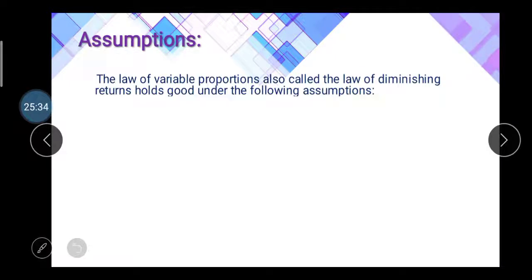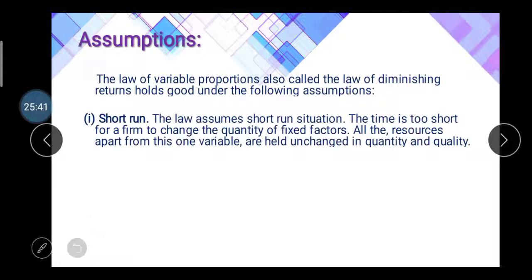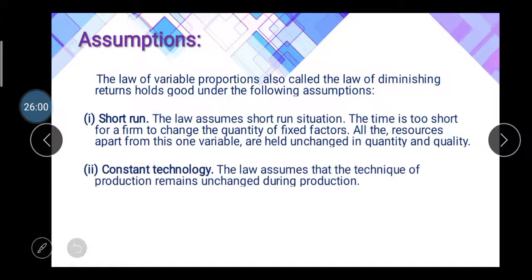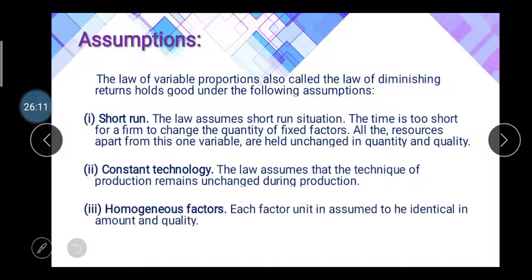Assumptions of the law of variable proportion, also called the law of diminishing returns: First, short-run situation — time is too short for the firm to change the quantity of fixed factors; all resources apart from one variable are held unchanged in quantity and quality. Second, constant technology — technology of production remains unchanged during the production period. Third, homogeneous factor — each factor unit is assumed to be identical in quantity.